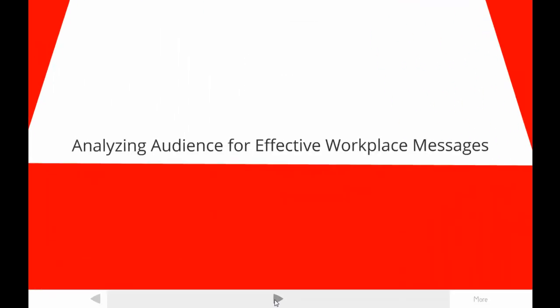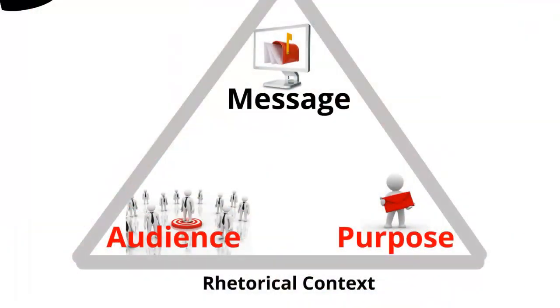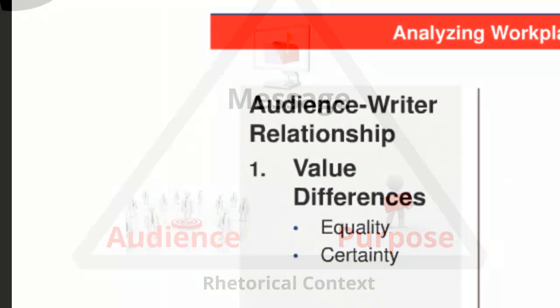In this tutorial, I'll explain two aspects of analyzing audience in order to create successful workplace messages: the audience's relationship with the writer and the audience's readiness to accept the writer's message. The first aspect focuses on the side of the rhetorical triangle that connects the audience and the writer, or writer's purpose. I'll discuss three ways of categorizing the writer-reader relationship within a professional context.